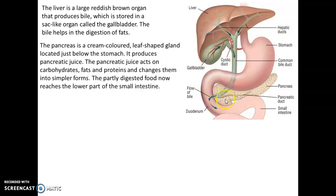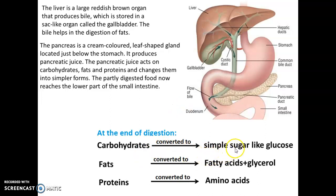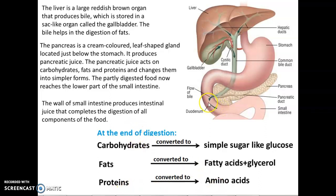Similarly, the leaf-like structure located just below the stomach is the pancreas, which produces a juice called pancreatic juice. This pancreatic juice acts on carbohydrates, fats, and proteins and converts them into simpler forms. Carbohydrates are converted into simple sugars like glucose, fats are converted into fatty acids and glycerol, and proteins are converted into amino acids. The wall of the small intestine produces intestinal juice that completes all digestion in the small intestine.